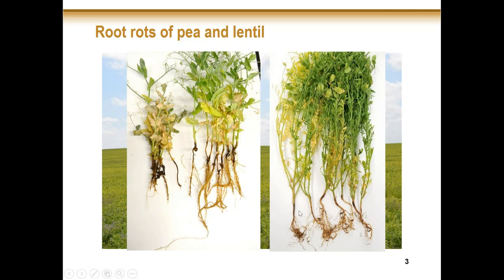For lentils, sometimes they don't look quite as distinct as on peas and maybe the damage isn't quite as severe, but certainly we see the same impact on yield. We can see that sort of blackening and browning of the taproot, and then the loss of the lateral root mass.